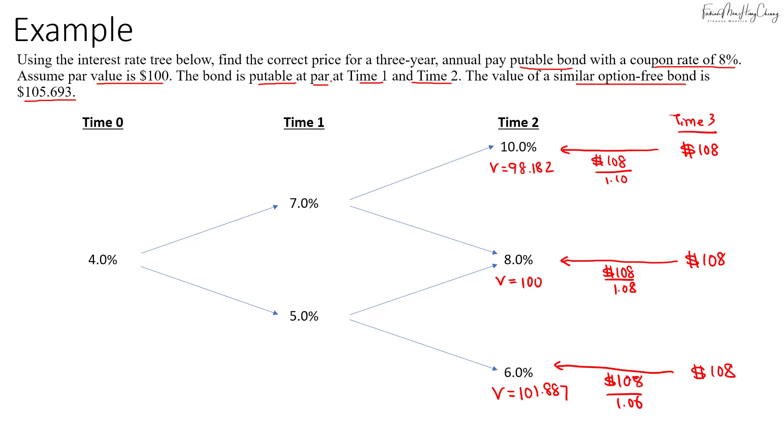In this case, the bond can be put back if the bond price is below par. At this point, the bond price is below par, so we will exercise the put option and the value would then equal 100. The rest are all either equal to 100 or above 100, so we cannot exercise the put option.